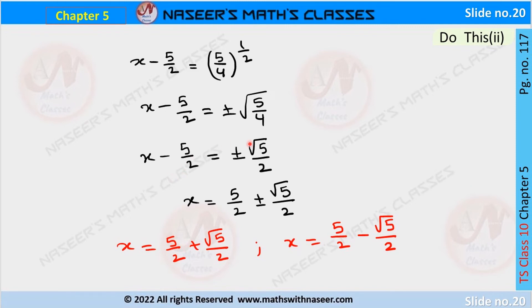Transposing -5/2 from LHS to RHS: x = 5/2 ± √5/2. So the two solutions are x = 5/2 + √5/2 and x = 5/2 - √5/2.